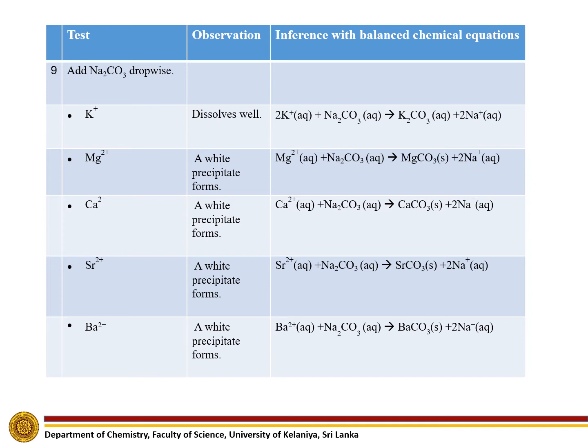Magnesium, calcium, strontium, and barium ions will give white precipitates with sodium carbonate. They are magnesium carbonate, calcium carbonate, strontium carbonate, and barium carbonate respectively.